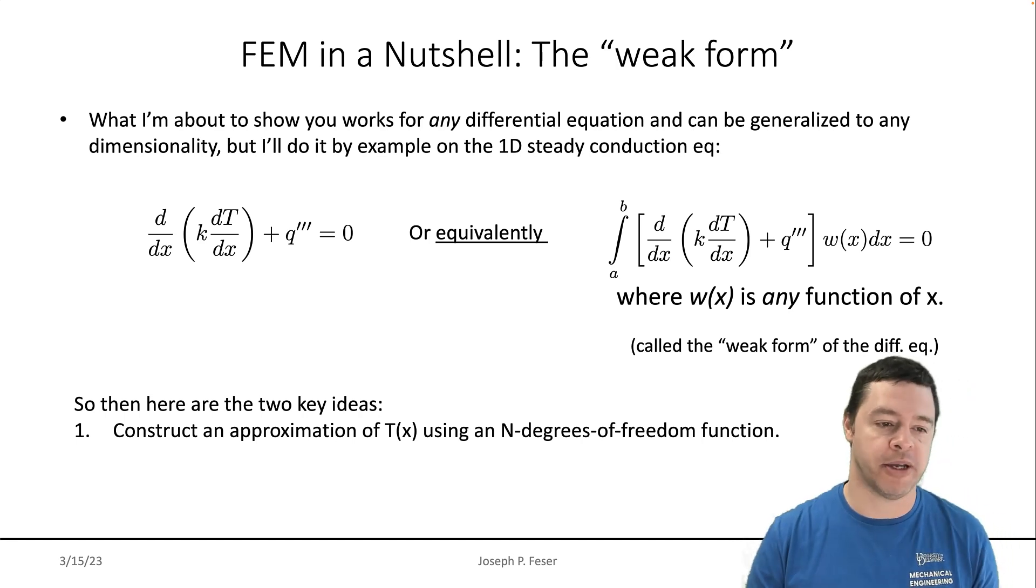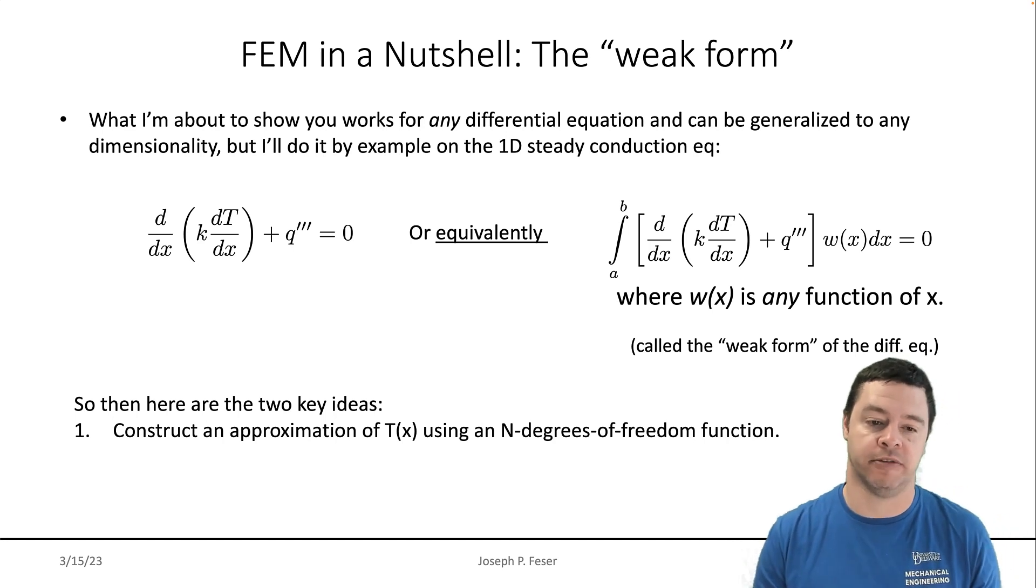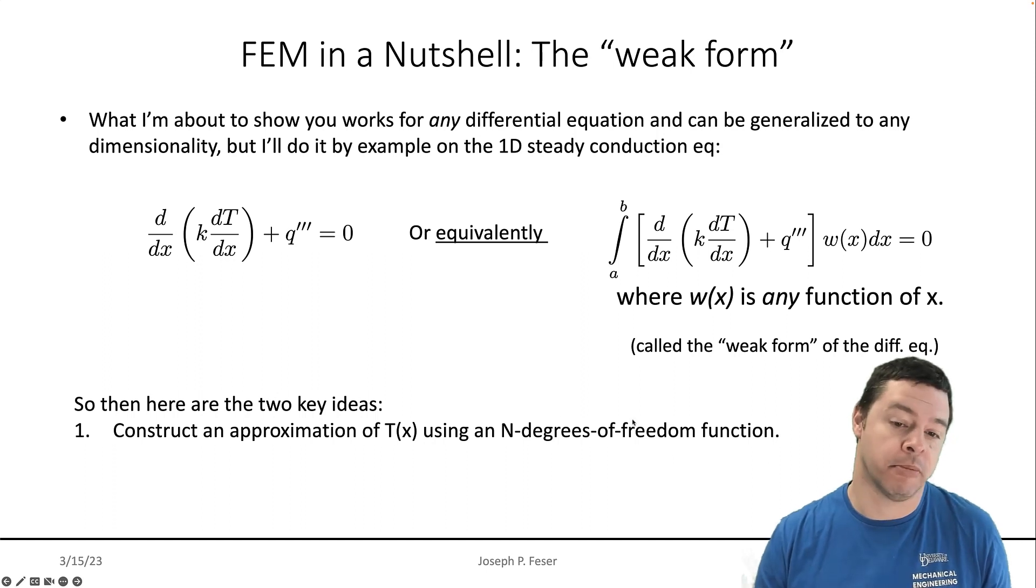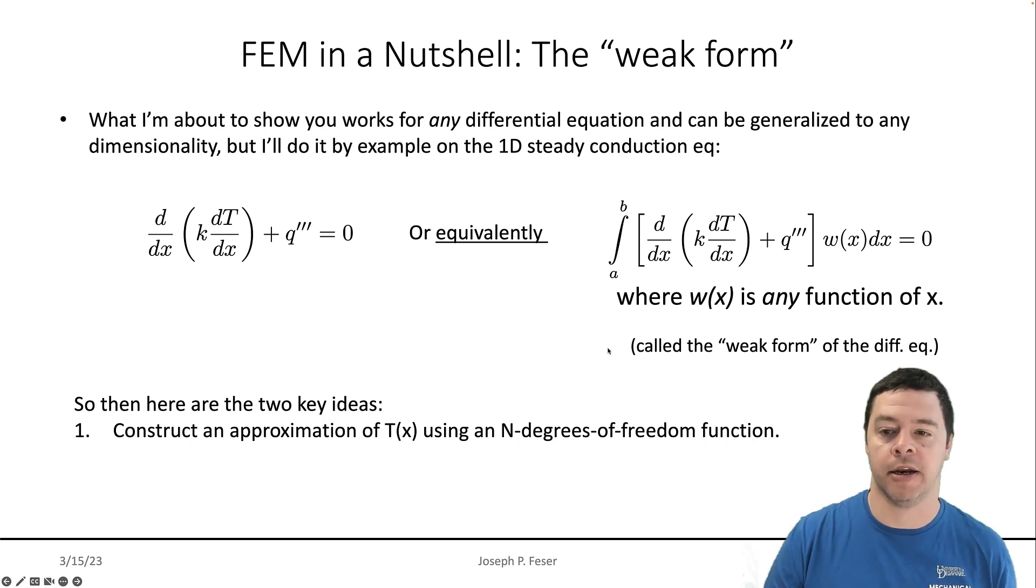So here are the two, there are basically two key ideas of how we use this weak form of the equation. So what we're going to do is we're going to construct an approximate solution for T(x). So I'm looking for T(x) in this equation. I don't know how to get it necessarily, but what I'm going to do is I'm going to form an approximation of T(x) using a test function with a bunch of degrees of freedom. So in practice, this is usually a polynomial. So I'll choose like an n degree polynomial or something like that.